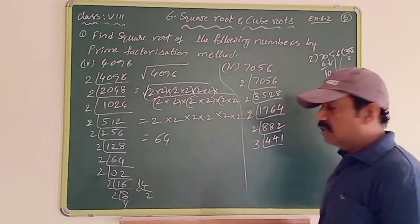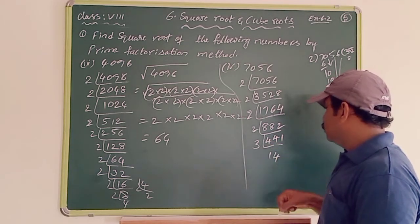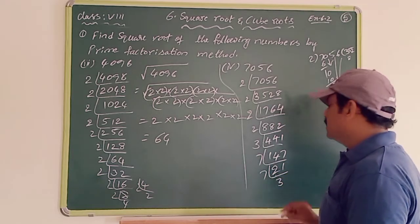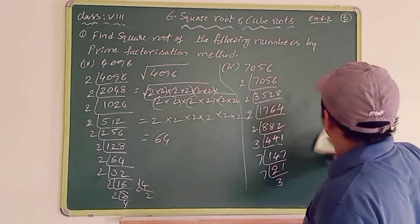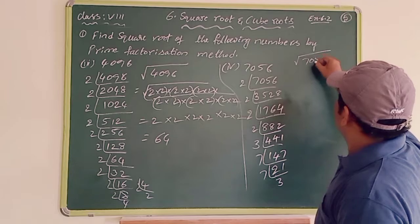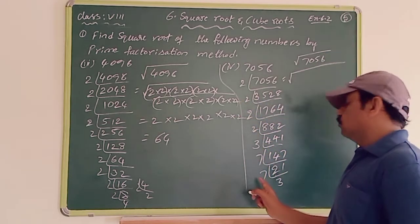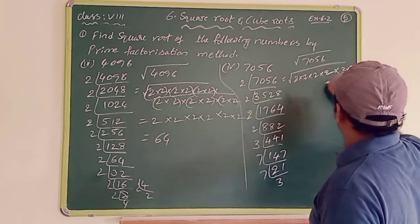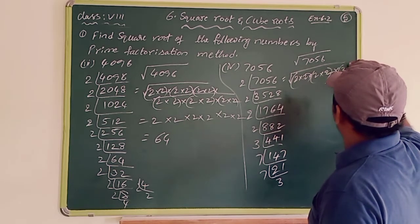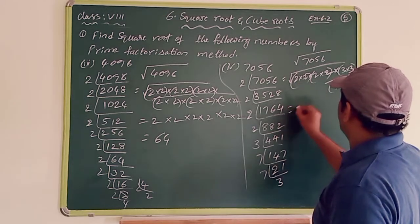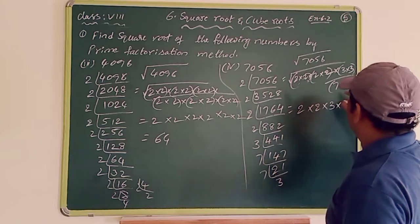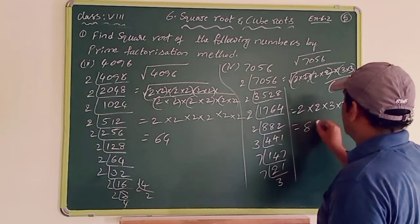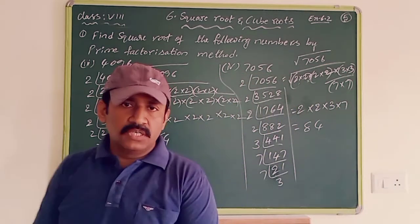For the square root of 7056: we have four 2s (two pairs), two 3s (one pair), and two 7s (one pair). From each pair, take one number: 2×2=4 from the two pairs of 2, then ×3 from the pair of 3s, then ×7 from the pair of 7s. So 4×3×7 = 84. The square root of 7056 is 84.